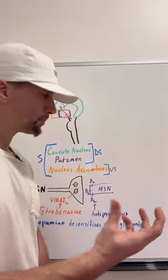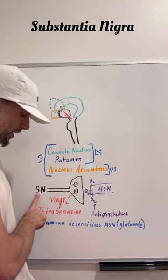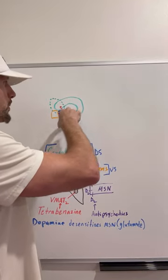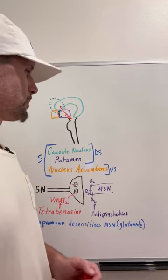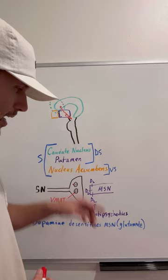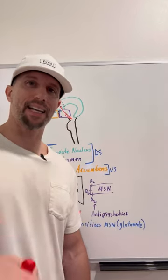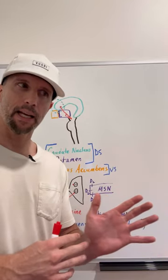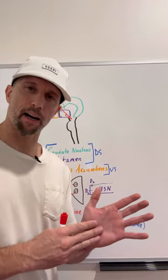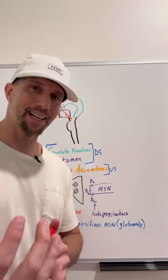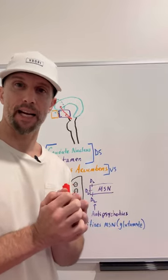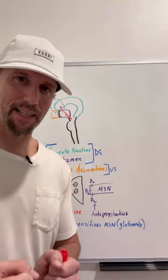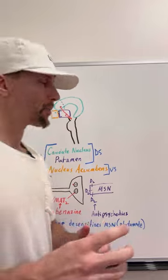We have medium spiny neurons in here with dendrites that receive signals of dopamine. The dopamine comes from the midbrain — the substantia nigra (SN) — and you have projections from the substantia nigra that go to the putamen and the anterior caudate nucleus. Basically what dopamine does is it desensitizes these medium spiny neurons to glutamate — the major excitatory neurotransmitter. So if we want our inhibitory neurons to fire and they're desensitized to glutamate, they're not going to fire. If we can block dopamine, we can decrease its desensitizing effect on those neurons.